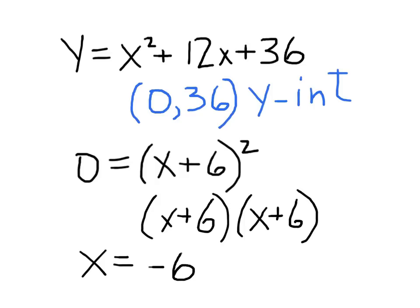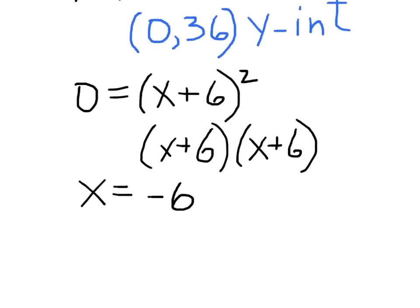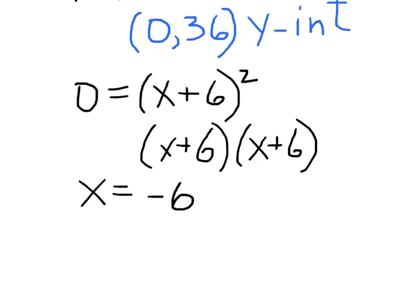And so to write this as the ordered pair for the x intercept, all we have to do is: we do have an x value, it's this. We do have a y value, but the value itself is zero. That's why we put this in here for y. That becomes our y value here. And that's it. This is our x intercept.